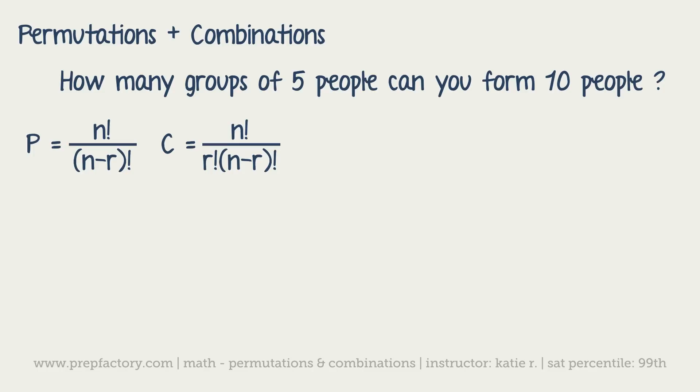These formulas, both of them, are actually in your calculator as NPR and NCR. N is the bigger number or your big group, and R is your small number. For instance in this problem, because order does not matter, it's a combination. If I was just putting in my calculator, all you'd have to do is say okay, it's ten C five.